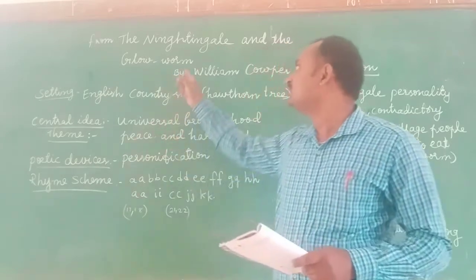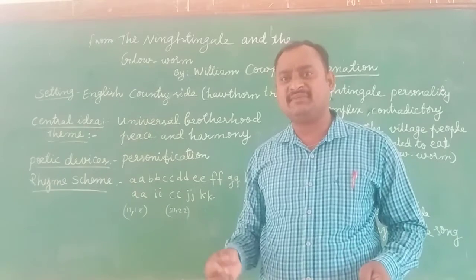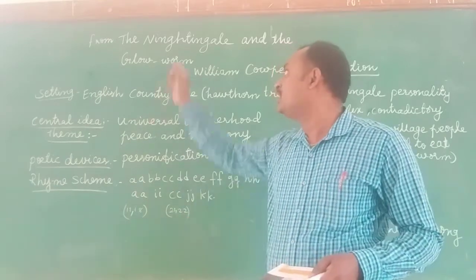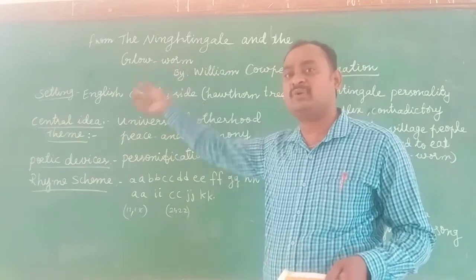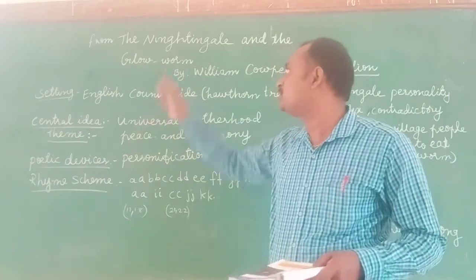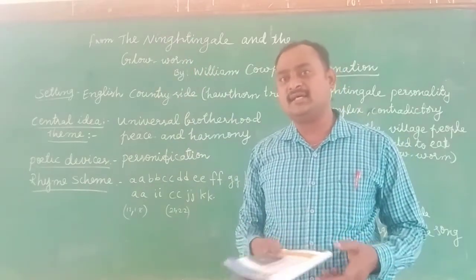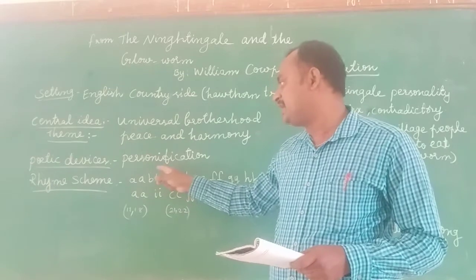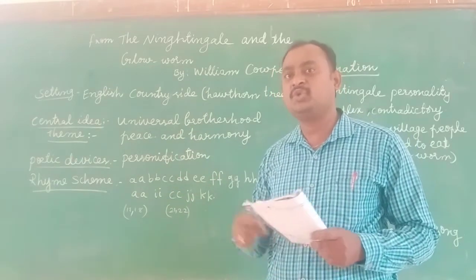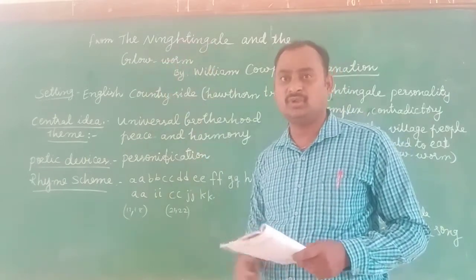In this poem, the nightingale and the glow-worm are unable to talk like humans. They are unable to make a conversation between them. But here, the nightingale is addressed as 'he'. That is the reason we can say personification is used in this poem, by giving human attributes to animals like the nightingale and the glow-worm.